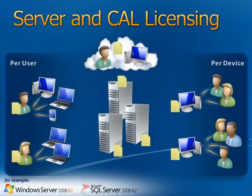If we have external people — non-employees of the company — that we want to access the services of the server, we could also buy them CALs. It is important to remember that one Windows Server CAL will license you to access all the Windows Servers in your corporate network, but the CALs are version specific and they must match the highest version of server being used. So if two servers were Windows Server 2003 and one was Windows Server 2008, the CALs used must be Windows Server 2008 CALs.